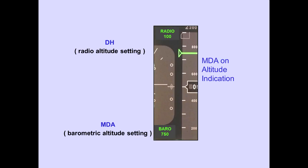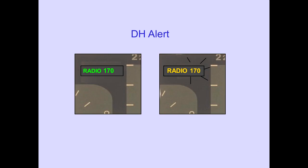Minimum descent altitude, a barometric altitude setting, and decision height, a radio altitude setting, are displayed if selected on the respective EFIS control panel. An MDA indication is displayed on the altitude indicator. Descending below the set decision height changes the display to an amber flashing radio altitude.